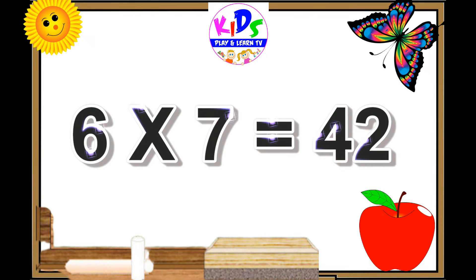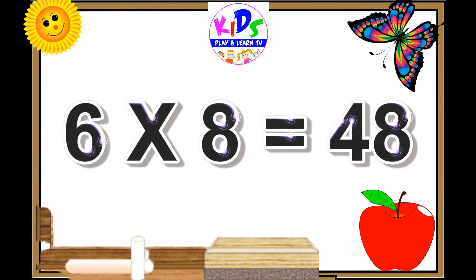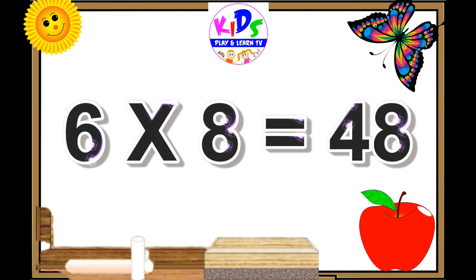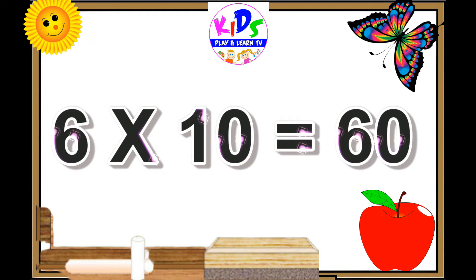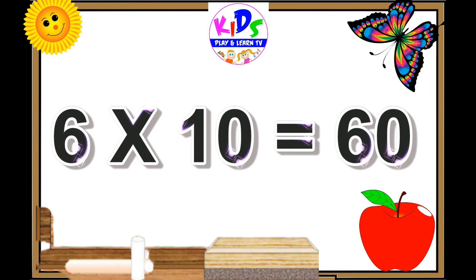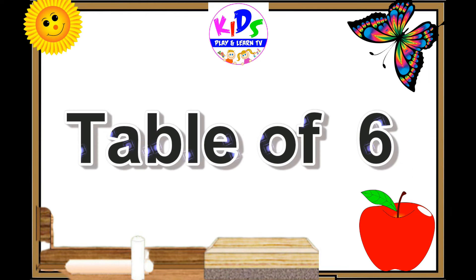Six sixes are thirty-six. Six sevens are forty-two. Six eights are forty-eight. Six nines are fifty-four. Six tens are sixty.